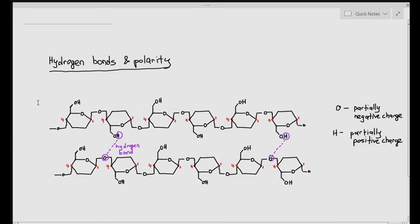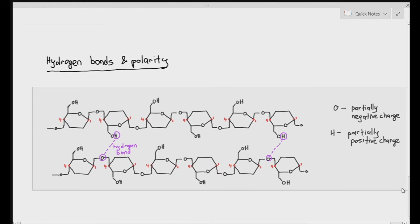This is just an image of the previous topic where you see two cellulose chains forming hydrogen bonds with each other. I did mention that oxygen has a partially negative charge and hydrogen has a partially positive charge. We want to talk a little bit more about this today.